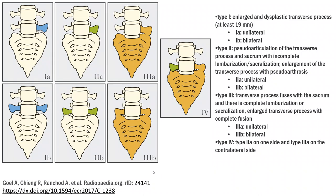Type 1a is where we can see an enlarged and dysplastic transverse process, at least 19mm, unilateral. And Type 1b is bilateral enlarged and dysplastic transverse process.